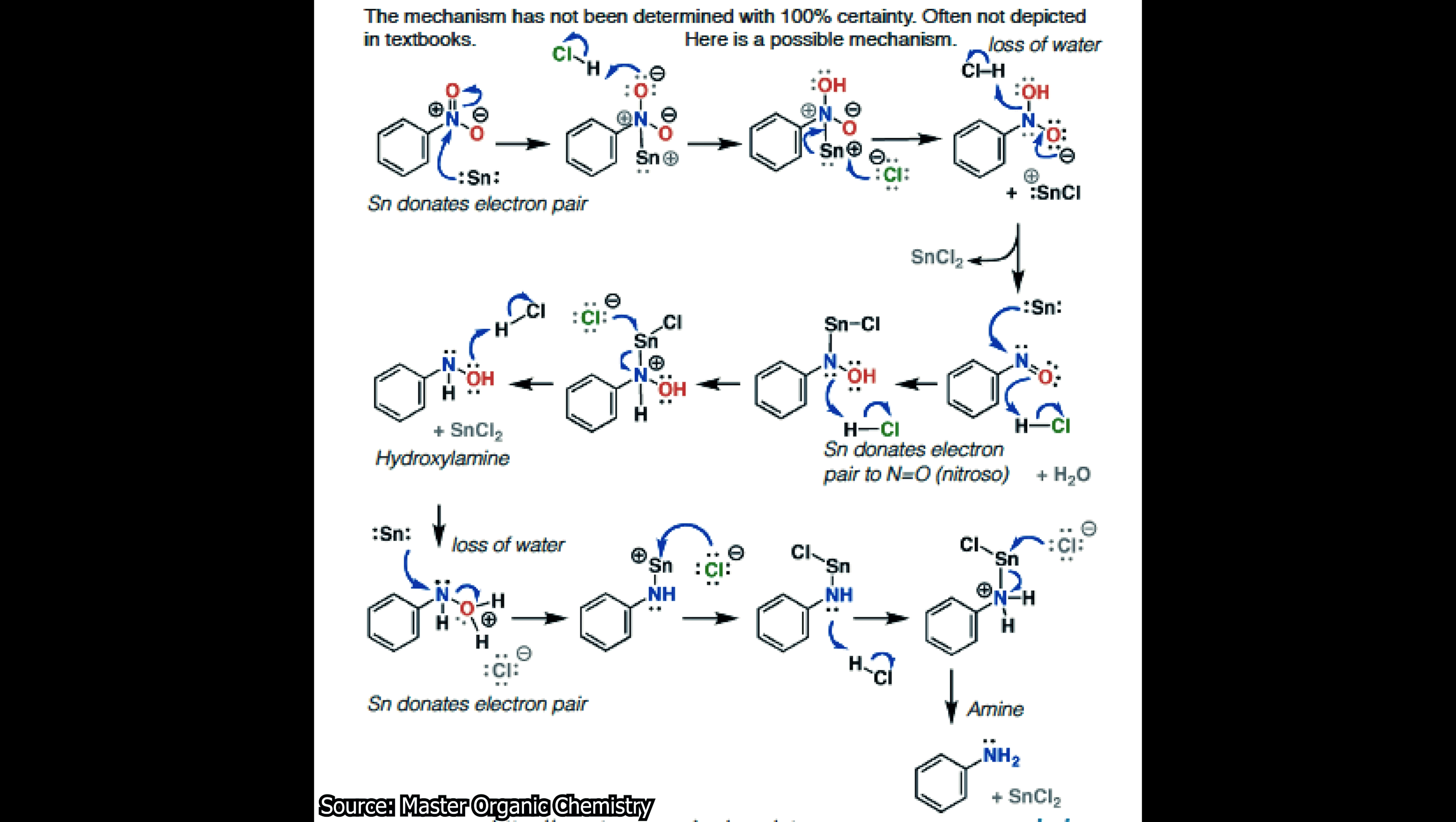Tin chloride is also ejected, and then tin donates an electron pair to the nitrosol group. It essentially goes through this a couple times, with a couple reactions, and we end up with our amine.